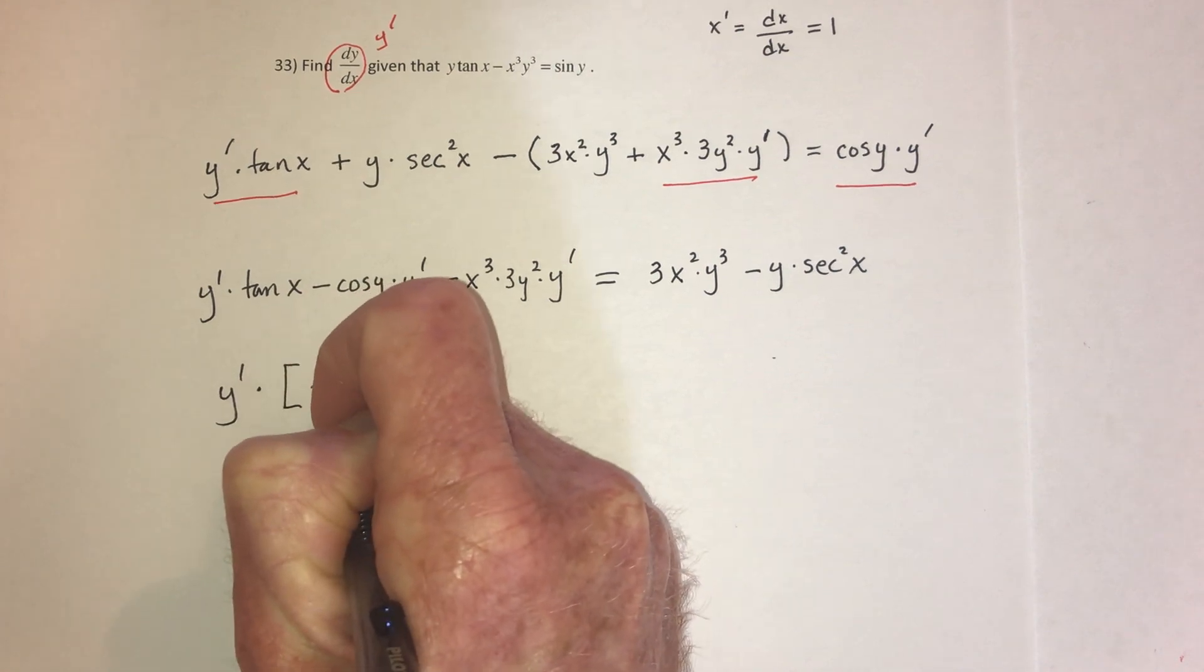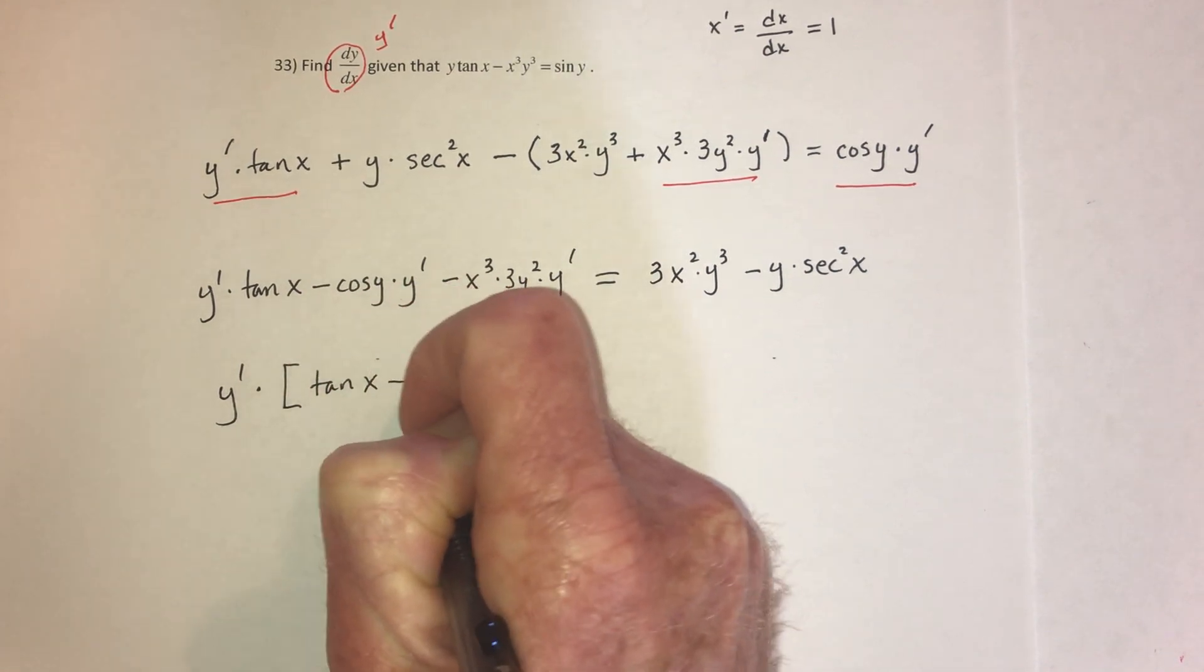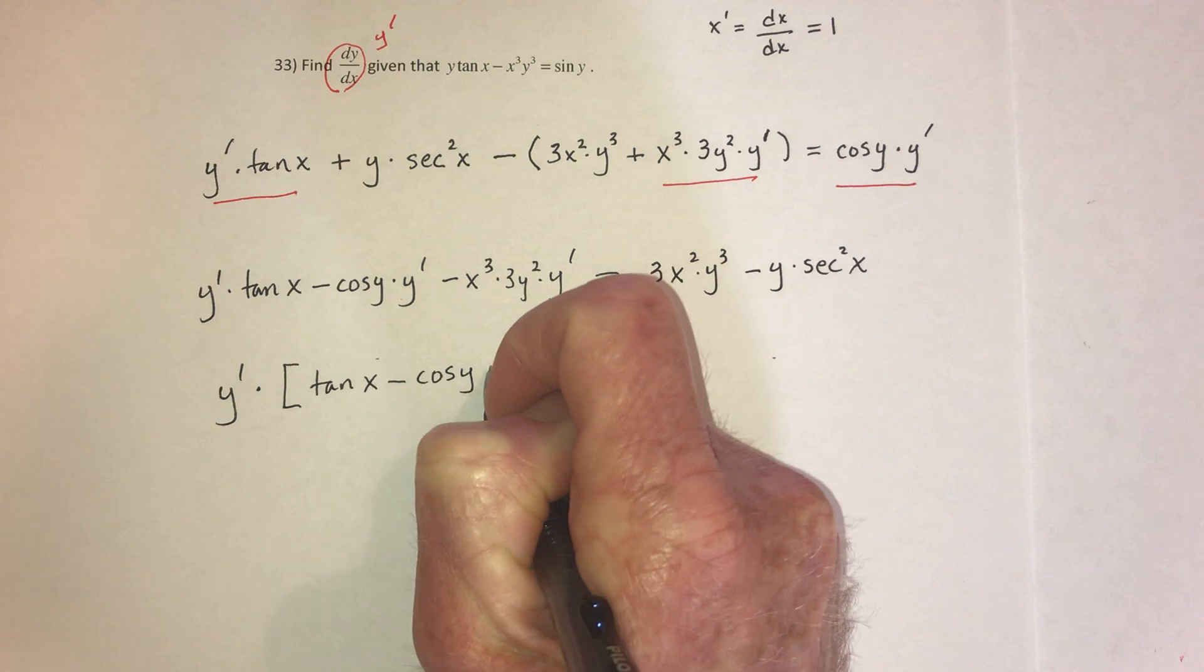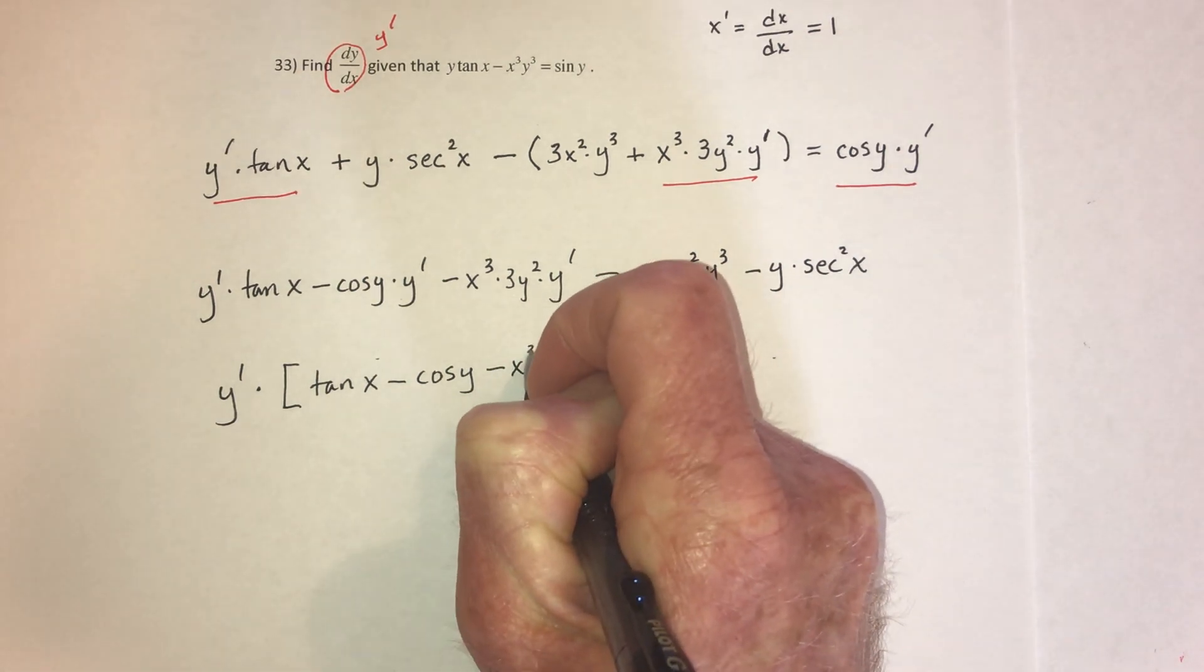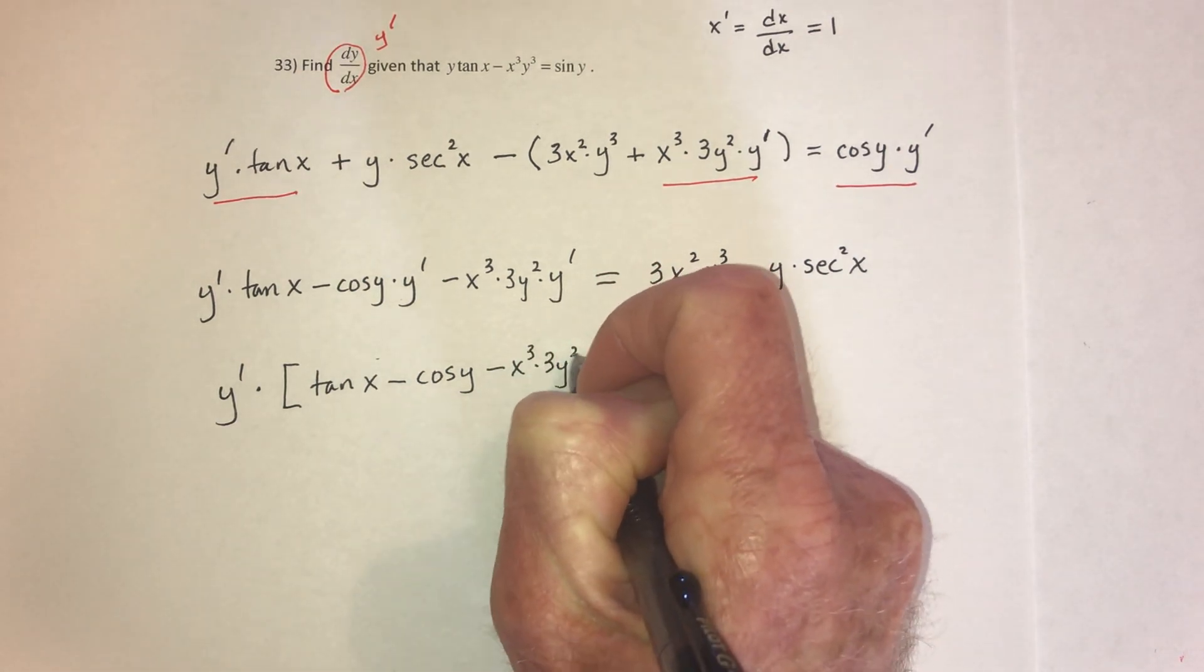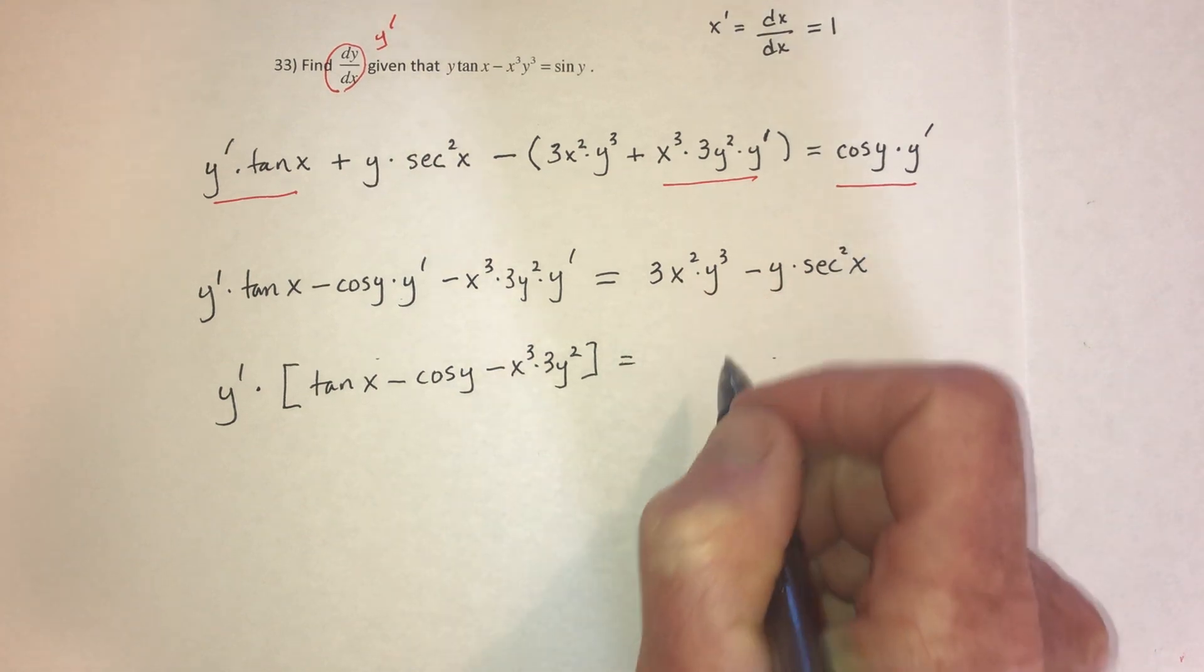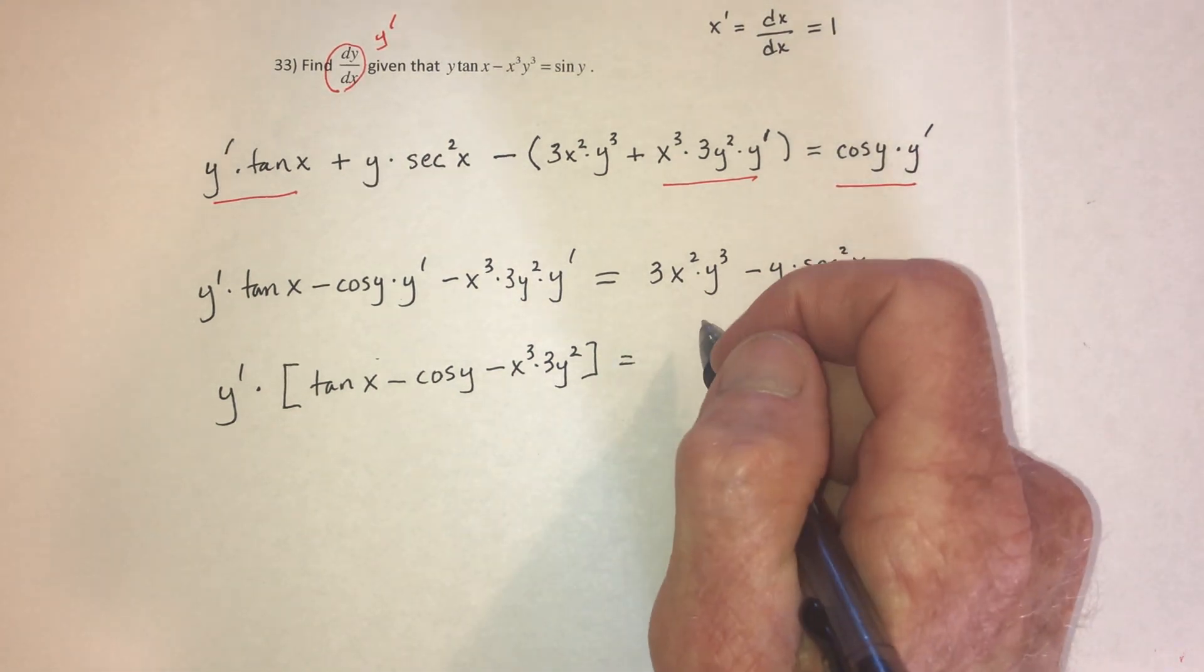So if you factor it out, it leaves tangent of x minus cosine of y minus x cubed 3y squared. And this side, you can just leave it like that.